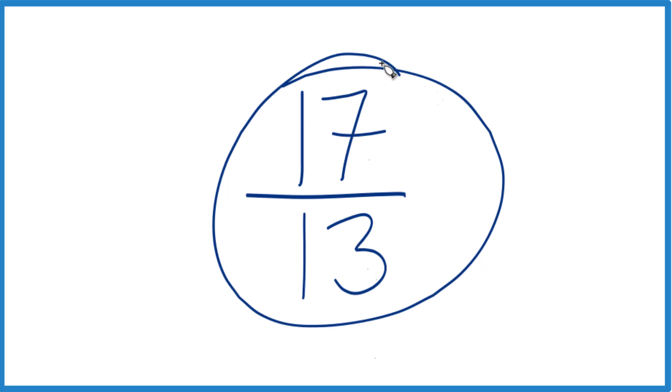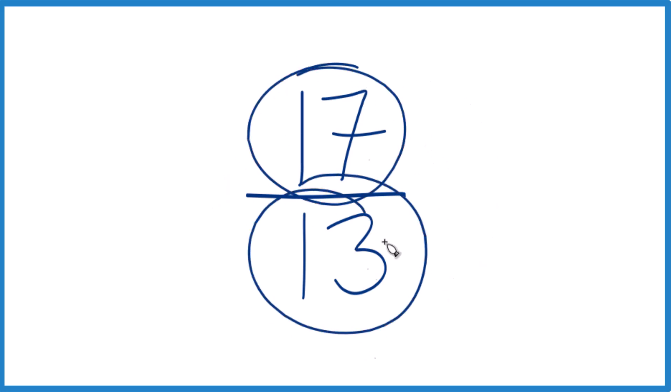We can't reduce or simplify 17 thirteenths any further. But because we have a numerator here that's larger than the denominator, it's called an improper fraction. We can write this as a mixed number. Let's do that.